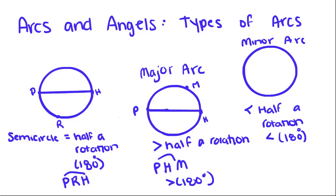So first, there are three types of arcs. We have what's called a semicircle, which is arc P, R, H. You have to go in the order of points — you start with P, go to R, go to H — and that's half a rotation of a circle, which is equal to 180 degrees. So a semicircle is always equal to 180 degrees. That's just how this arc is measured, not the length of it.